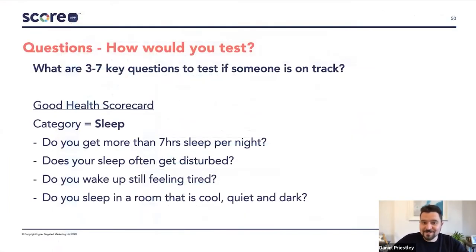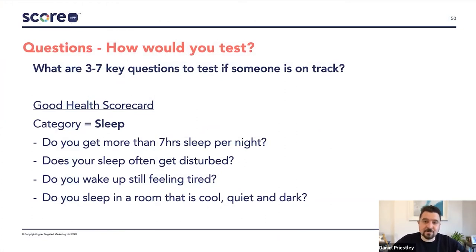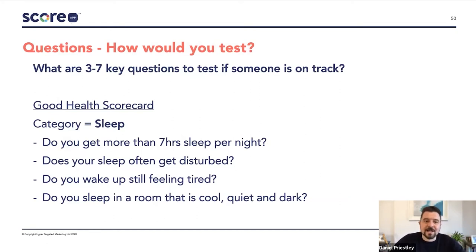The next question is questions. Now you've got some categories, we want to look at what are the questions that each category is going to ask in order to give a score for that category. Typically you have between three and seven questions per category. So if you've got three categories and you do three questions per category, that adds up to about nine questions for the whole scorecard.